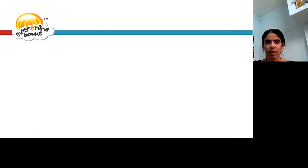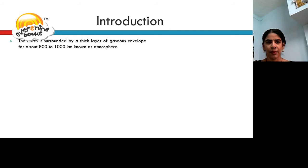Let us look into the chapter. The earth is surrounded by a thick layer of gaseous envelope for about 800 to 1000 km. This layer is known as atmosphere.